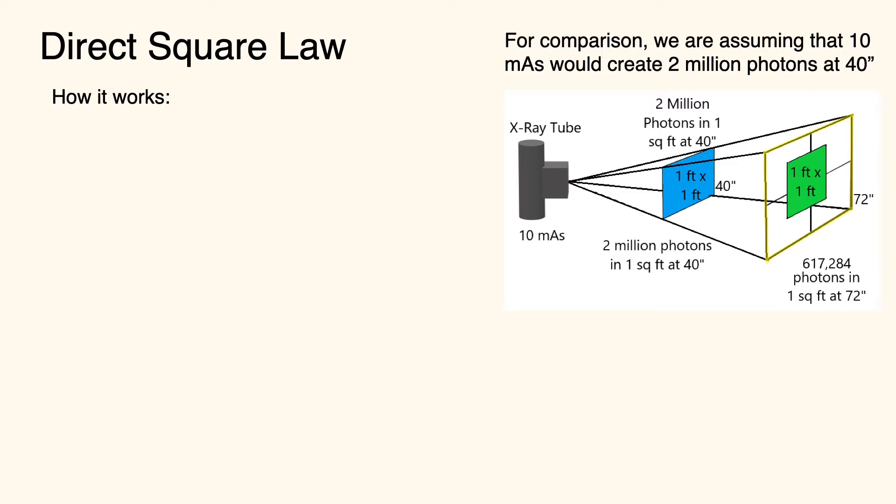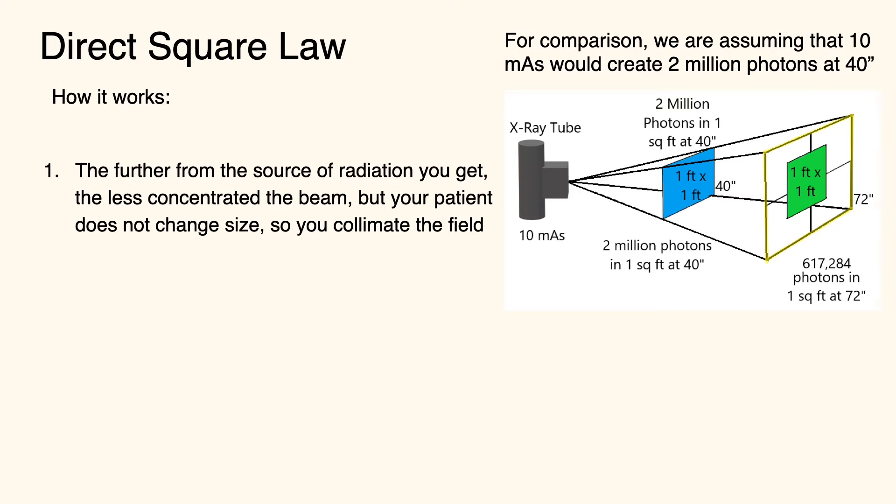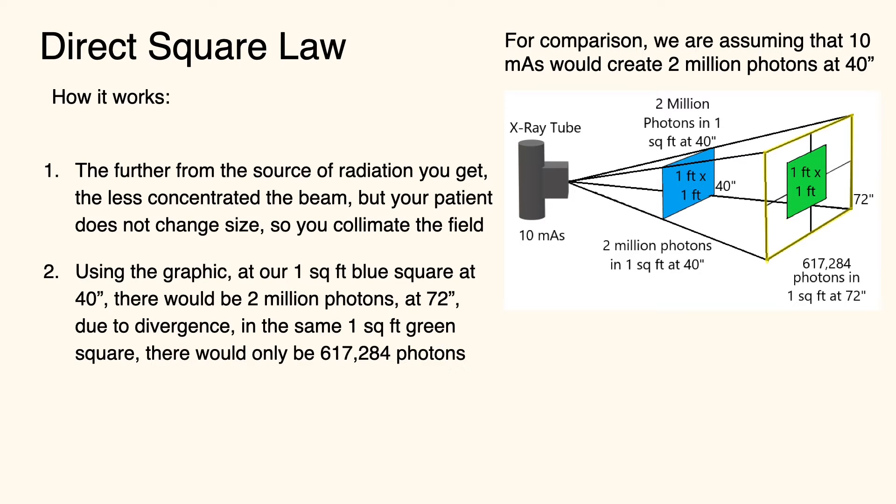So as you see on this graphic, we're going to make the assumption that at 40 inches from the x-ray tube, we're producing two million photons. And that is a one by one foot square. So if you move further back, say at the 72 inch example, we still have that one foot by one foot square.